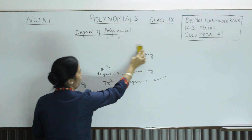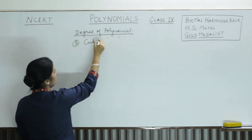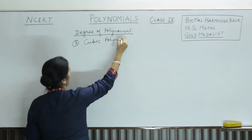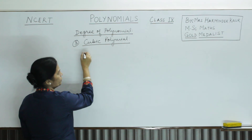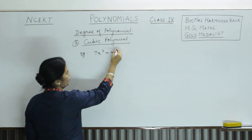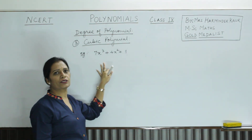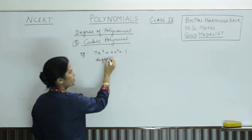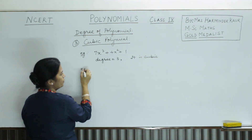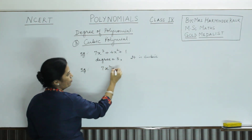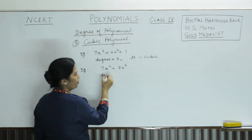Next is cubic polynomial. A cubic polynomial is one where the highest power of x is 3. For example, 7x cubed plus 4x squared plus 1 — the highest power of x is 3, so we say it is a cubic polynomial, and degree is 3. Another example: 7x squared plus 8x cubed — regardless of the order written, the highest power is 3, so it is a cubic polynomial.